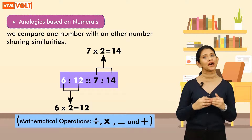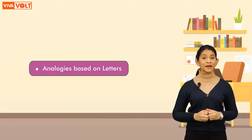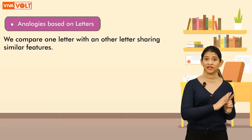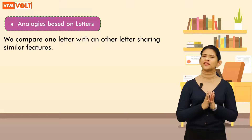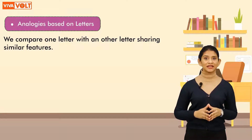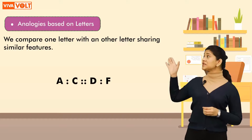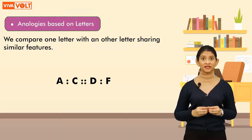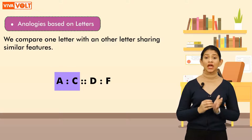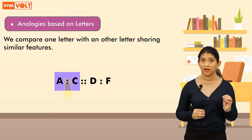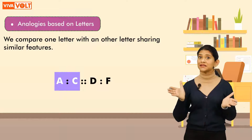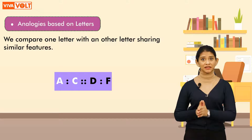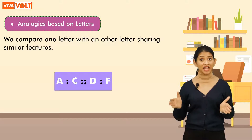Let's now move to another type of analogy: analogies based on letters. In this type, we compare one letter with another letter sharing similar features. Let's understand this with an example. Let's try to find the relation between the pair of letters on the left — one letter B is skipped between A and C. Similarly, the letter E has been skipped between the letters D and F on the right.